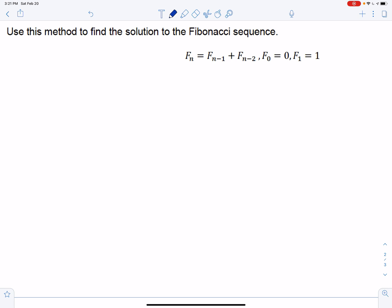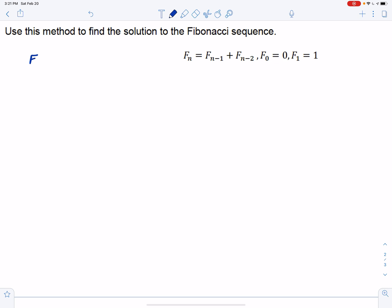Just remember where we're at here. We assume that the solution has the form Fn equals T to the n. So that means we have T to the n equals T to the n minus 1 plus T to the n minus 2.